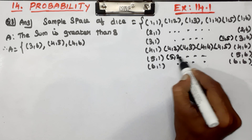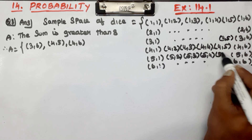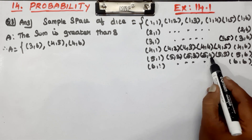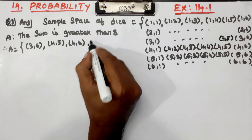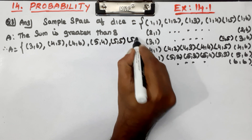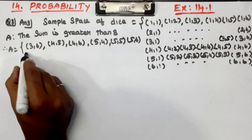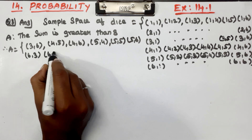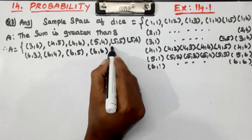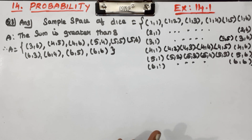Continuing Event A: (4,6) equals 9, (5,4) equals 9, (5,5) equals 10, (5,6) equals 11. Then (6,3) equals 9, (6,4) equals 10, (6,5) equals 11, (6,6) equals 12. So this is how many events have a sum greater than 8.